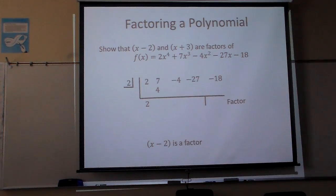Add 7 and 4. Now, here's what we get to add and subtract it, which makes 11. 2 times 11 is 22. Negative 4 plus 22 is 18. 2 times 18 is 36. Negative 27 plus 36 makes 9. 2 times 9 is 18. Because it was a 0, I know this x minus 2 is a what? Factor.